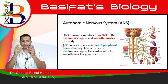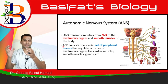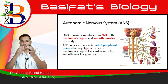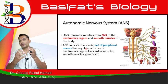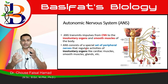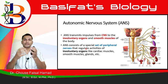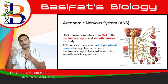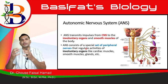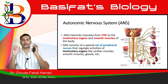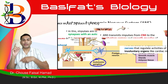These nerve bundles surround the involuntary organs such as cardiac muscles, smooth muscles, glands, and so on. Their work is to control all the activities and messages to those organs. This is the autonomic nervous system.